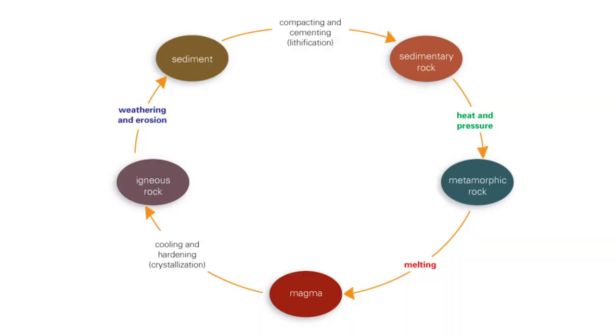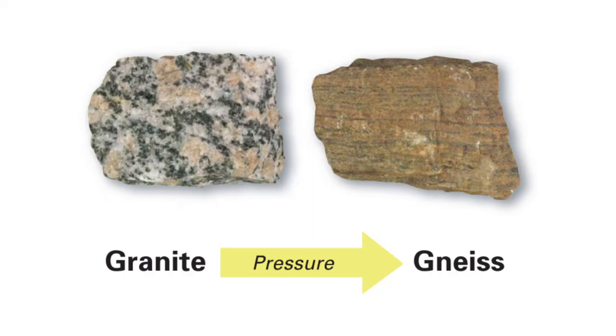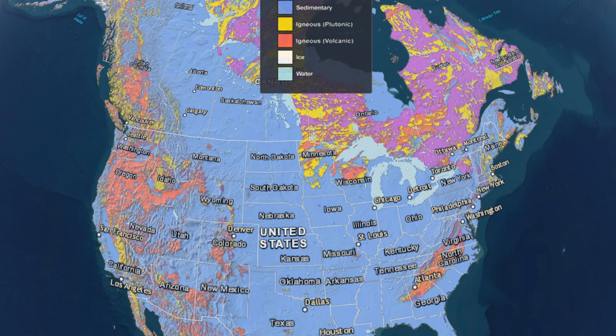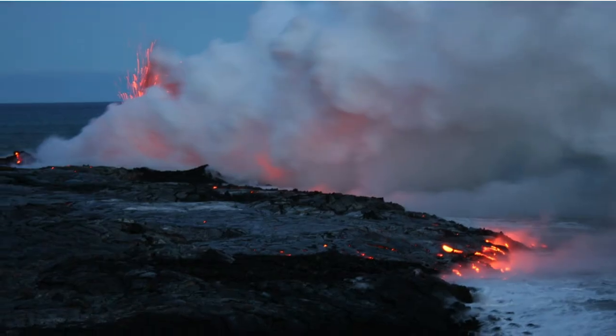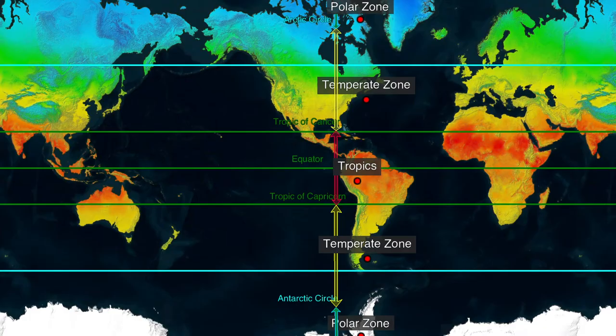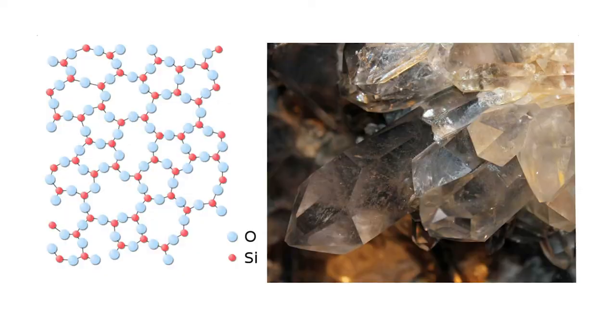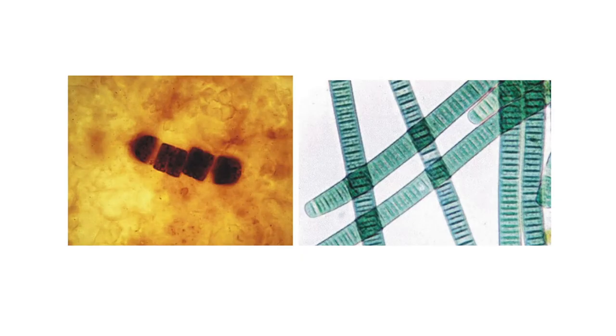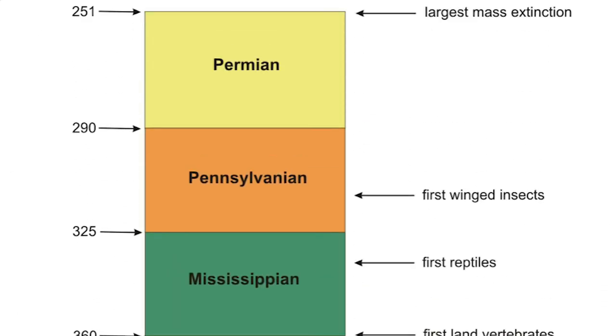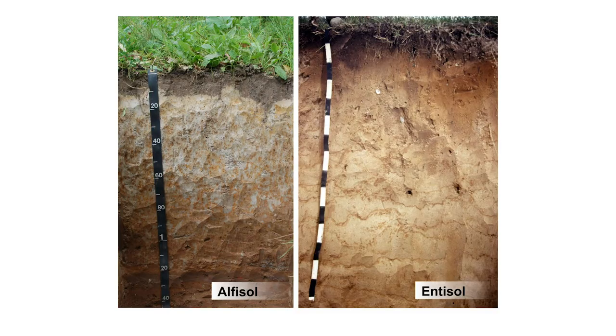Classify the three rock types and how their mineralogy and formation processes through the rock cycle are connected. Observe the formation of the three rock types and the relationship between their physical and identifiable properties, their location on the Earth, and the environmental conditions they were formed under. And compare and contrast chemical and mechanical weathering and how climate, topography, parent material, plants and animals, and time play an important factor in the development and formation of soils.